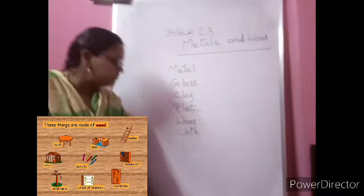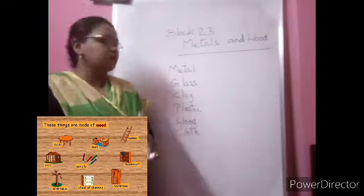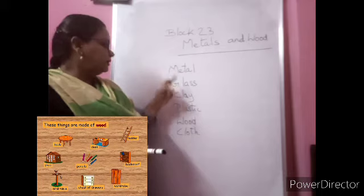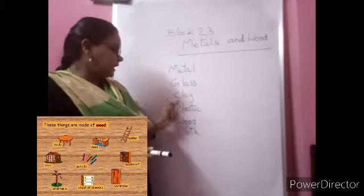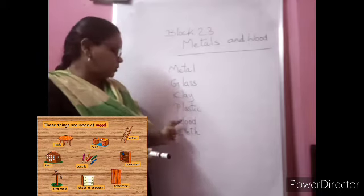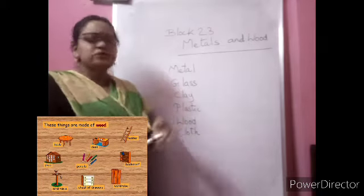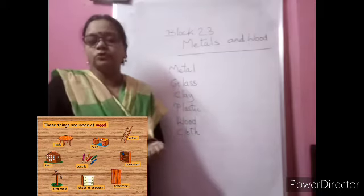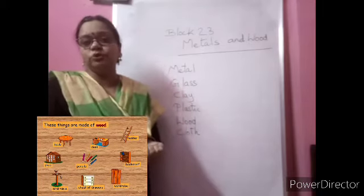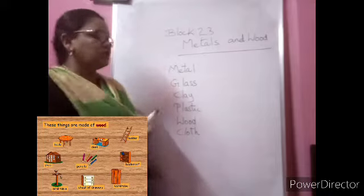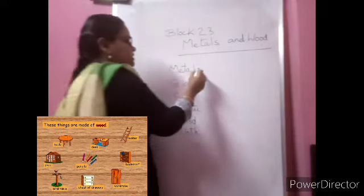On the board you can see some material names: metal, glass, clay, plastic, wood, cloth. We will try to name two things which we use in our life made up of each of these materials.